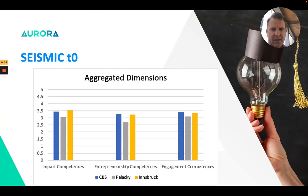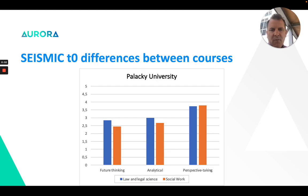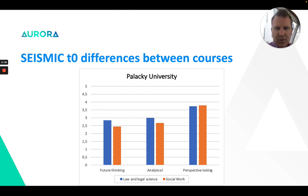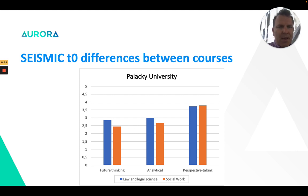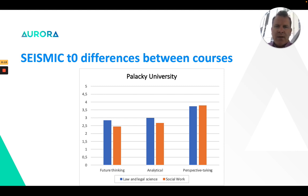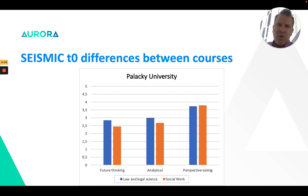Let me pick one example. This is data from Palatzky University, where you can see that on the one hand we have students from law and legal science, and on the other hand students from social work. Unsurprisingly, legal students score higher on analytical thinking — something you would probably expect among legal scholars — while social work students score a little bit higher on perspective taking, the ability to understand what other people think and feel. What surprised me was future thinking, where social work students are actually scoring lower than legal students. This could be something that study board directors of the social work program may want to analyze: isn't future thinking particularly important for students who are going to become social workers?